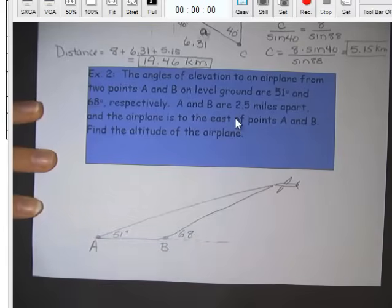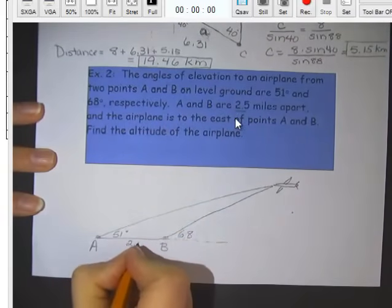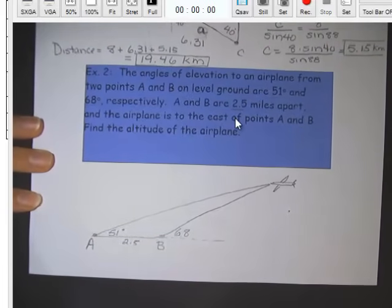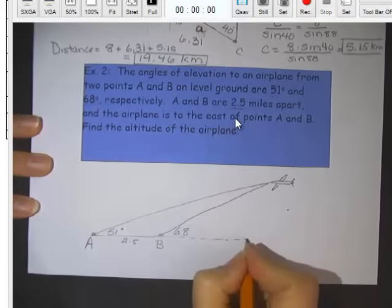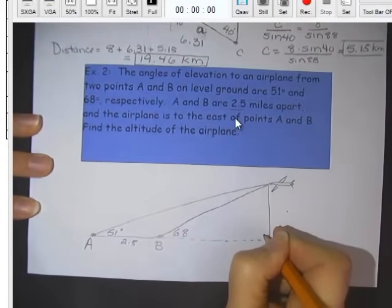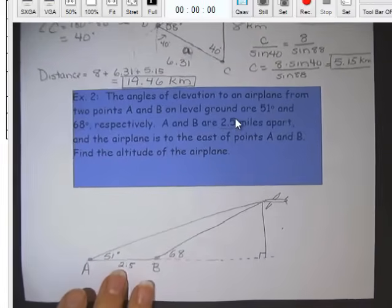It says here A and B are two and a half miles apart, so this is two and a half miles. And we are looking for the altitude of the airplane. So how high up is the airplane? Now we know altitude of an airplane is usually in feet. And so if we want to, at the end of the problem, we can change it to feet, or we can change to feet right now as we go. I say we wait until the end of the problem so we don't have to look at these larger numbers as we go.